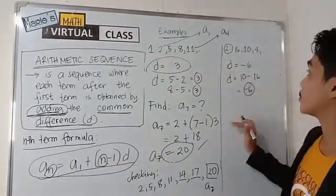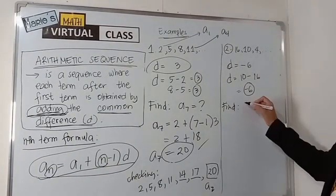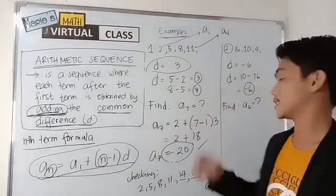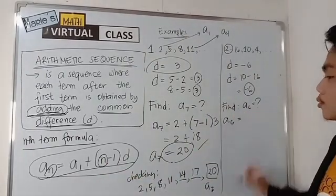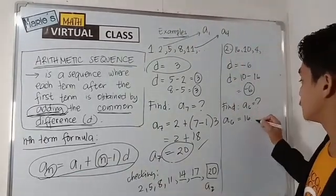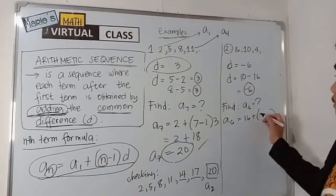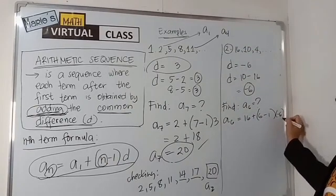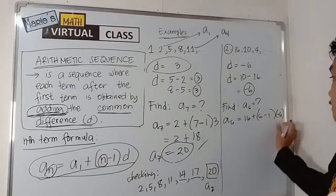And how about in this example? What about if you are asked to find, let's have the sixth term. The sixth term of this sequence. By using the formula, we will have a sub 6 is equal to, our first term would be, and this is 16 plus, we are looking for the sixth term. Therefore, it is 6 minus 1 times the common difference negative 6. Don't forget to enclose it in parentheses because it is negative.